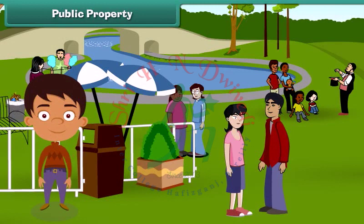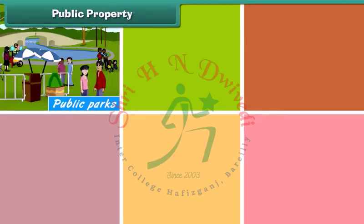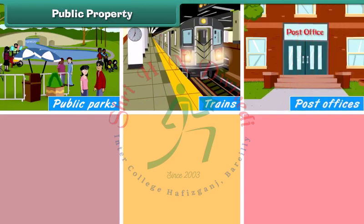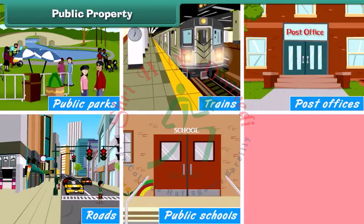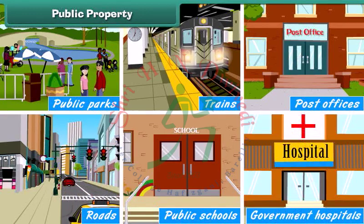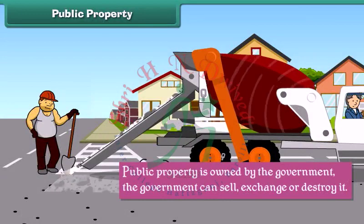Public property is property owned by the government. Such property is meant for the welfare of the people and is available for public use. All people of the country have equal right to use it. Public parks, trains, post offices, roads, public schools, public colleges, and government hospitals are all public properties.